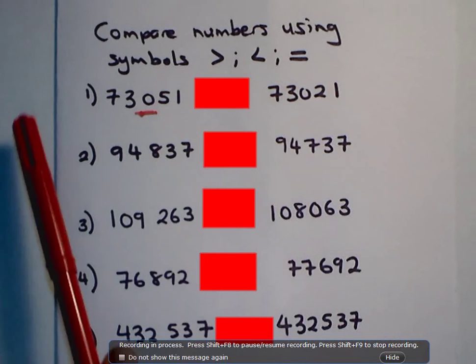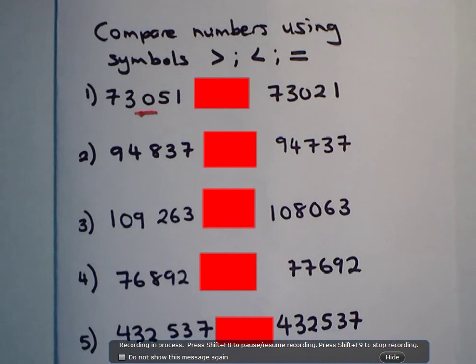On which side would the number be bigger? Now, we always start from the left-hand side. The number that's bigger, the crocodile's mouth will go towards that number. So, 73051 and 73021. 73051 is the bigger number. So, therefore, the animal or the crocodile would want to eat the bigger number.